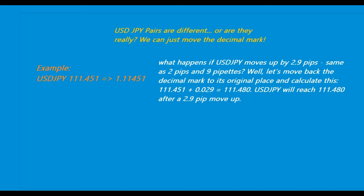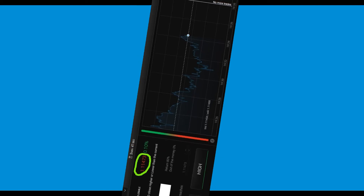So what happens in this example if USDJPY moves up by 2.9 pips? You add 0.029 to the asset price, and you see that in this case it will reach 111.48 — so it moved up 2.9 pips. It's pretty much the same scenario; you just have to think that the decimal moves a couple of digits. Pretty straightforward.